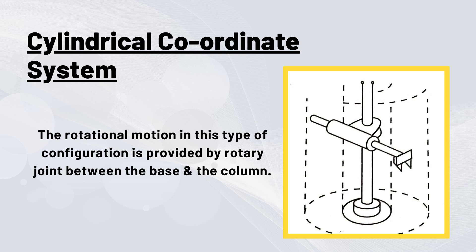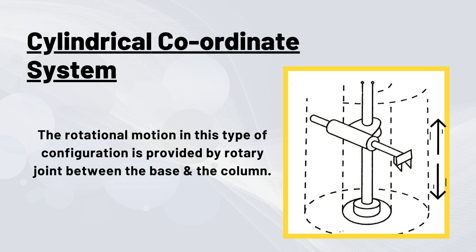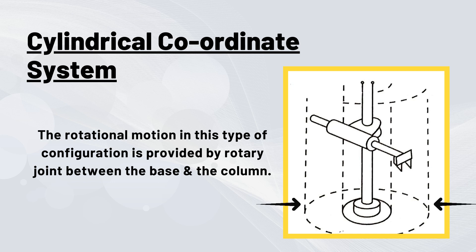Second, we have cylindrical configuration. Here there is one rotary and two linear motions of the robot. The rotational motion is provided by rotary joints between the base and the column. The vertical movement is provided by the linear joint between the column and the horizontal arm. The horizontal motion is due to the sliding joint in the arm. The motion envelope of the end point is cylindrical.